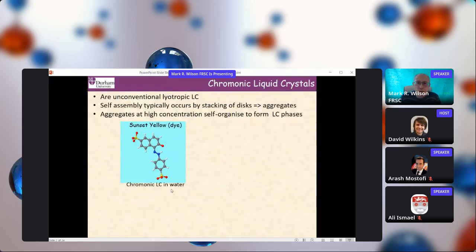Let me say a little bit about chromonic liquid crystals and explain what these systems are. They're essentially unconventional lyotropic liquid crystals formed from molecules like this disc-shaped molecule, sunset yellow, which is a food dye. These systems self-assemble in water, but in a radically different way to normal amphiphiles. The stacking that we get is the self-assembly process that occurs in solution. For a molecule like sunset yellow, the molecules will stack on top of each other.